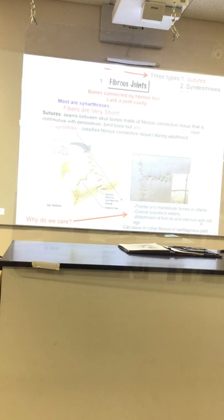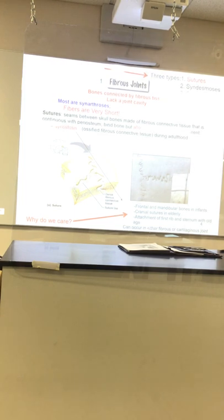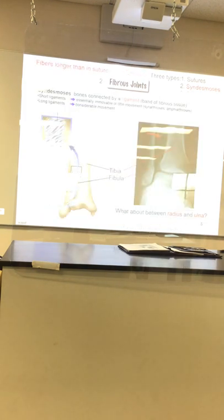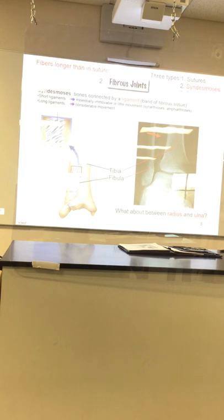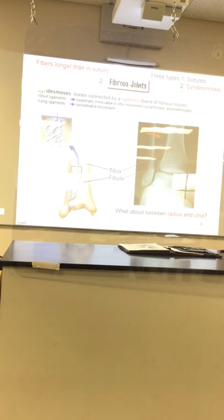Your skull bones are held together with fibers — fibrous joints. Specifically, we call them sutures because they are tiny little short ligaments holding them together. The skull bones do not move; there is no articulation. We consider them synarthrotic because 'syn' means togetherness — they don't move. Number two fibrous joint type is the syndesmosis, where two bones are held together with longer fibers.